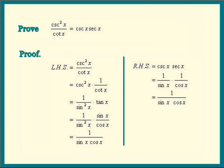You probably noticed a different way to do this problem. See the left hand side? We can just keep going and split that fraction into 1 over sine x times 1 over cosine x. If we had done that, we would get cosecant x times secant x right there and be done. So that would have been a little faster — but it doesn't matter. Splitting a problem into a left hand side and a right hand side is an important technique to learn.